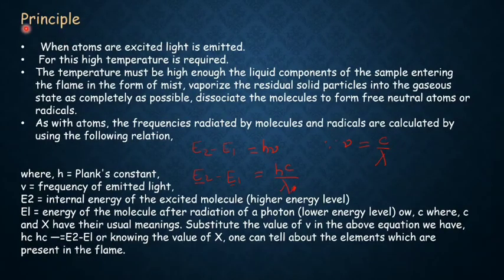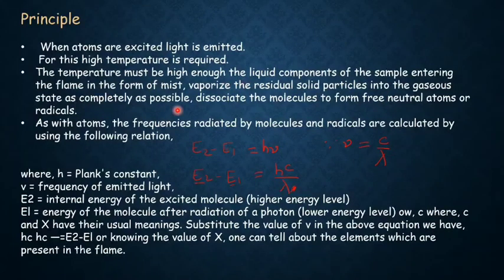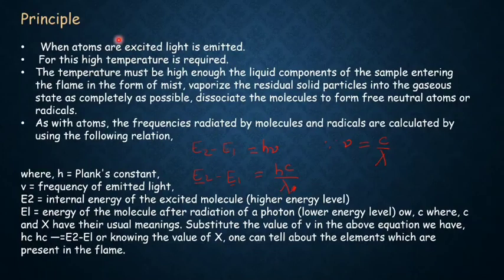The principle: the sample solution is aspirated into the flame, then it gets evaporated and atomized. When the atoms are excited, light is emitted; for this excitation, high temperature is required. The liquid components of the sample entering the flame in the form of mist vaporize the residual solid particles into the gaseous state as completely as possible, and after that dissociate the molecules to form free neutral atoms or radicals. The temperature must be high for vaporization and dissociation to take place.